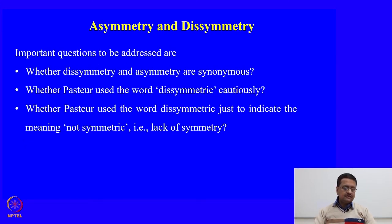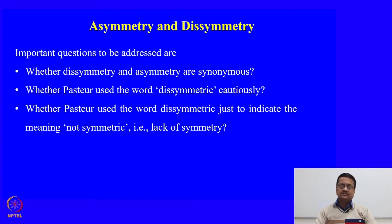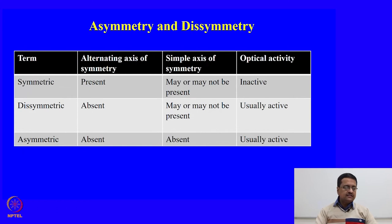In this class today, we will discuss about asymmetry and disymmetry and we will try to address three important questions. The first question is whether disymmetry and asymmetry are synonyms, whether Pasteur used the word disymmetric cautiously, and whether Pasteur used the word disymmetric just to indicate 'not symmetric,' that is the lack of symmetry. To start the discussion, I would like to draw your attention to this very simple table, which will be very useful in understanding this topic.